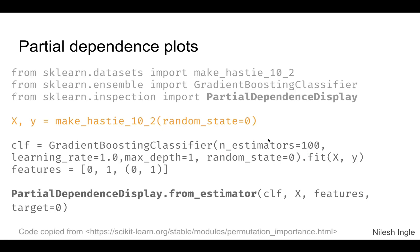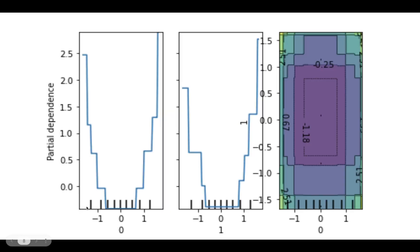Here is the code snippet, copied directly from the docs. We have generated data with X and Y values, we fit a classifier to it, and then to create the partial dependence plot we use PartialDependenceDisplay.from_estimator, passing the classifier, X, features, and target. This is the output of that code.